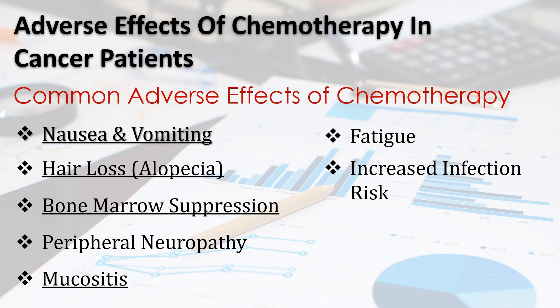Next, hair loss or alopecia. Chemotherapy targets rapidly dividing cells — unfortunately, that includes hair follicles. While it's usually temporary, it can have a big emotional impact on patients. Peripheral neuropathy is nerve damage that causes tingling, numbness, or pain, especially in the hands and feet. Drugs like vincristine and paclitaxel are often responsible. Fatigue is also very common — it's not just from the treatment itself, but also due to anemia and the metabolic stress on the body, deeply affecting a patient's daily life and mental health.